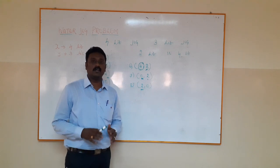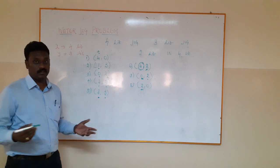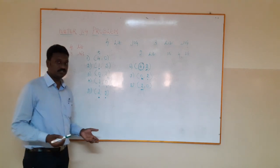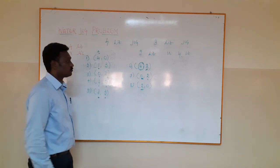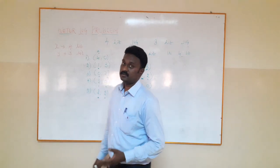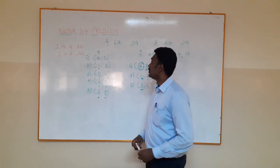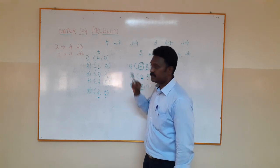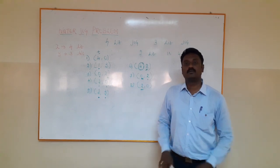The four-litre jug is entirely filled, so it holds four litres of water. The three-litre jug holds zero litres because I haven't filled it yet — so the state is (4, 0). In the second step, I pour all the water from the four-litre jug into the three-litre jug, so the entire three-litre jug becomes full.